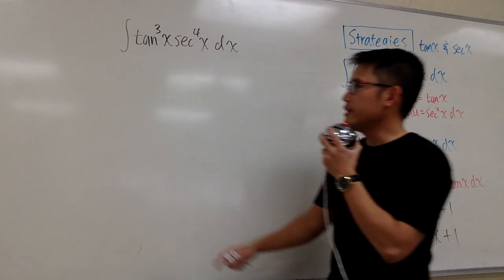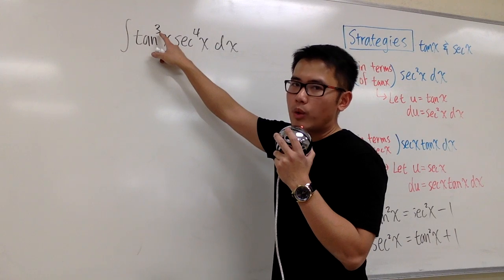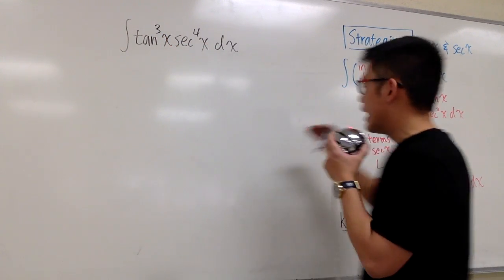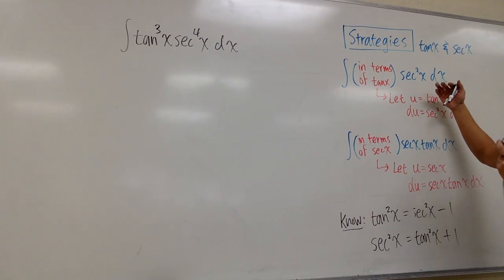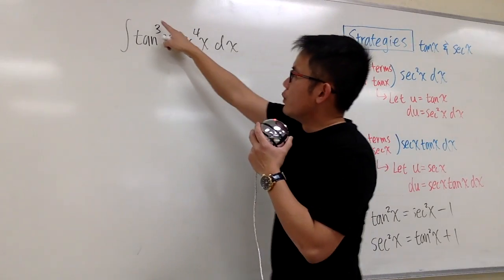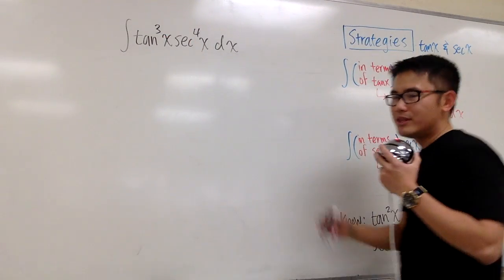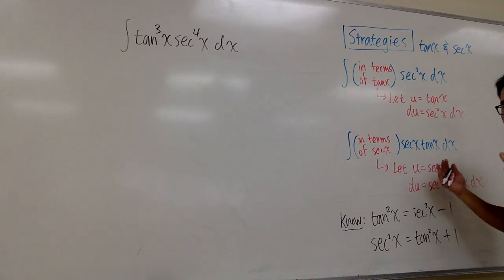Earlier, we worked out the integral of tangent to the 2nd power x times secant to the 4th power x. And the first strategy works, right? This time, we have the 3rd power for tangent. And let me tell you, the second strategy will work for us.